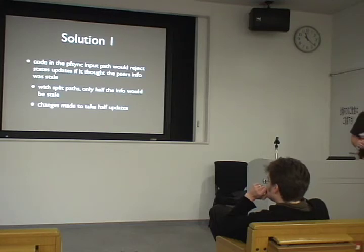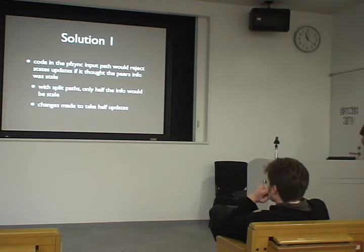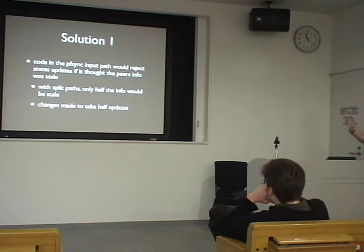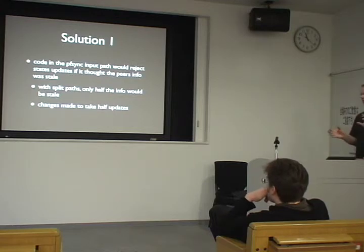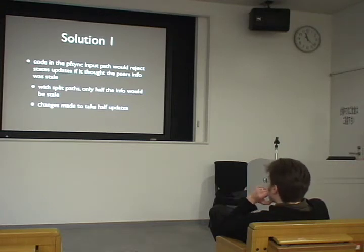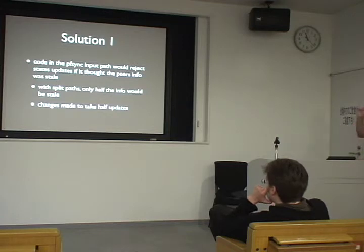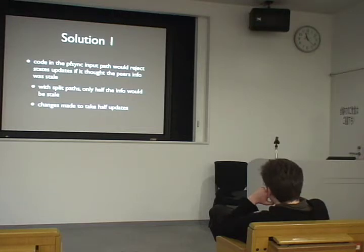The second change was that there's code in PFSync that rejects state updates when we have better local information. The problem is TCP has two sides to it — we were previously rejecting all sides of the information if any of them were out of date. This was modified so that each half was considered independently. So if one firewall updates one side of the TCP connection, we would accept that update rather than rejecting both. The third change introduced a new PFSync message: when you insert a state and think it's going to be split, you set a bit saying you need an acknowledgement for this insert.